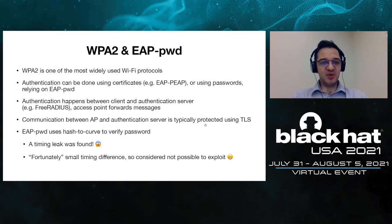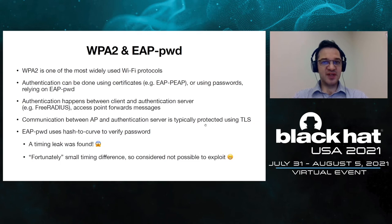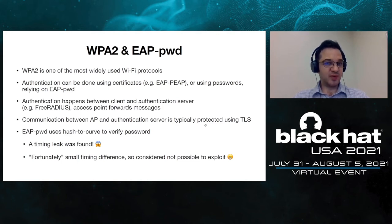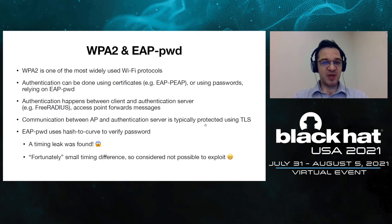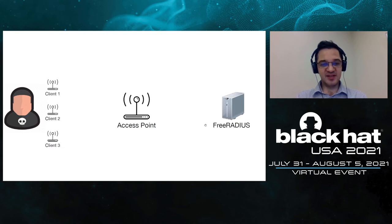EAPWD uses the hash-to-curve algorithm to verify the password. Unfortunately, a timing leak was discovered in this algorithm — the Dragonblood attack. Against EAPWD, this attack seemed hard to perform because the timing difference was small and it was unclear whether multiple measurements could be combined. In other words, this timing leak was considered impossible to exploit in practice. However, using the timeless technique, we can exploit it.